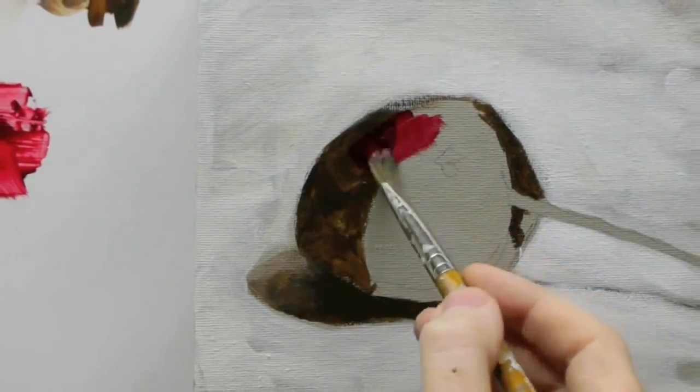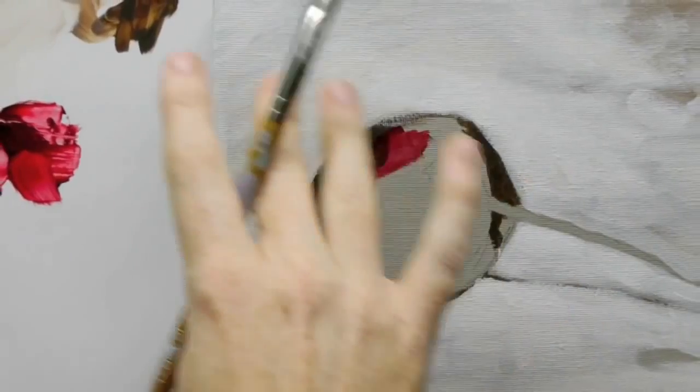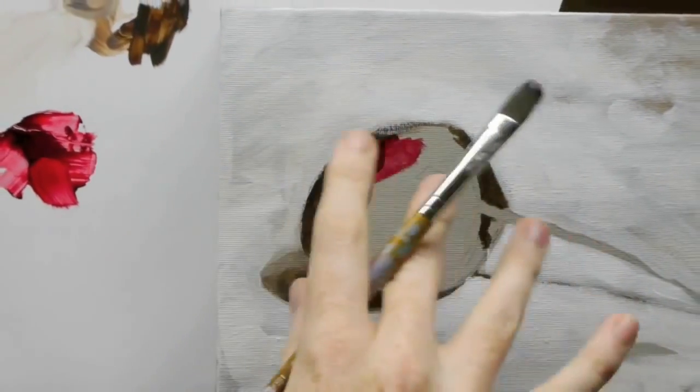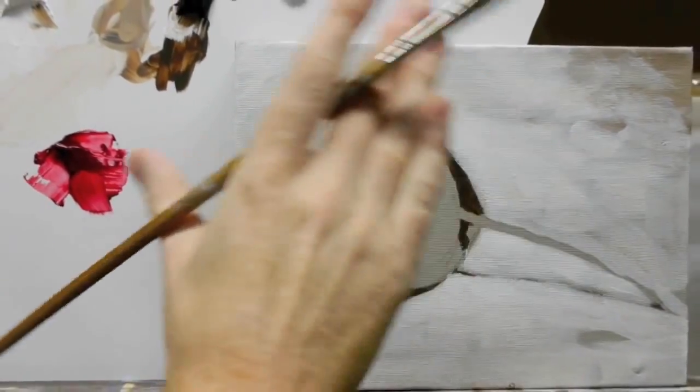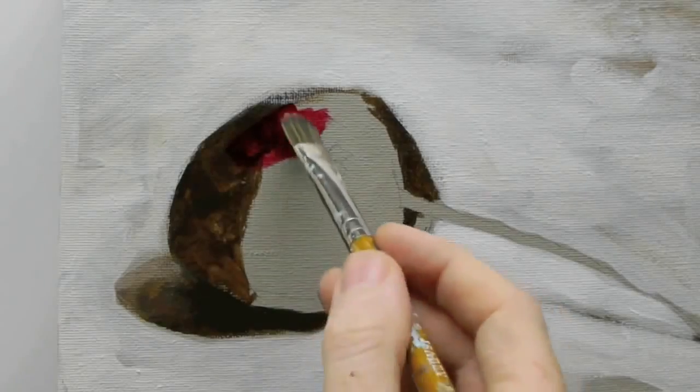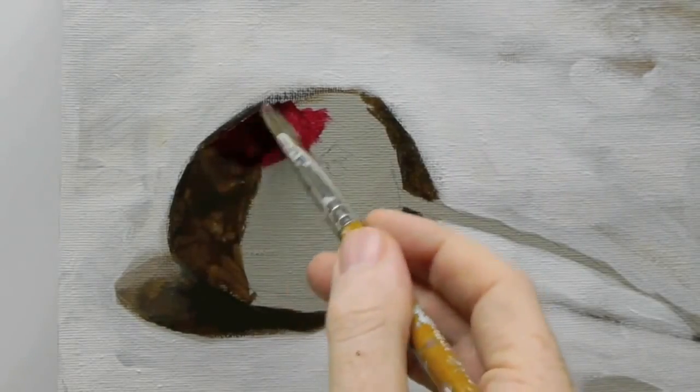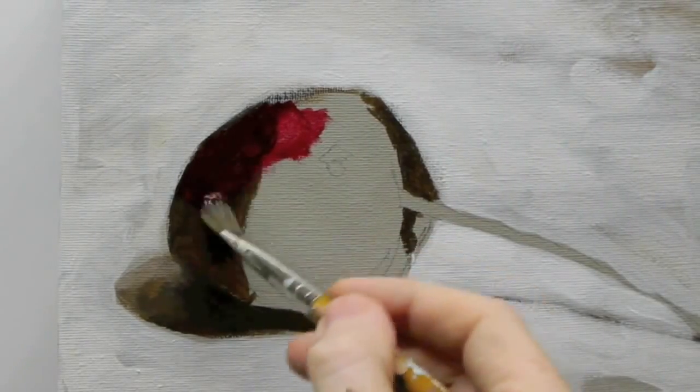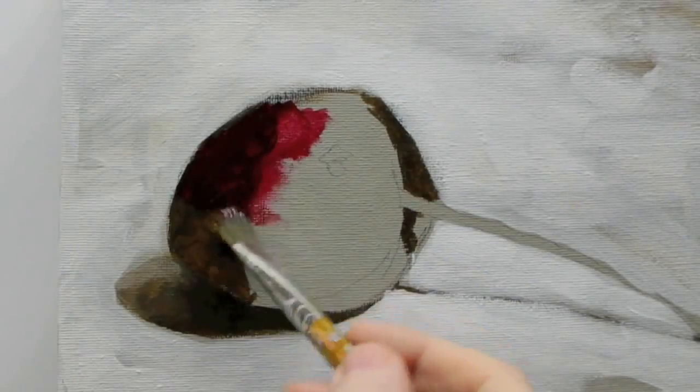So this is just called a glaze, where you have a thin layer of paint that goes over another. It's like trying to have a very thin translucent layer of coloured glass, like a stained glass window effect that you put over objects. So you see how what it does is it tones down the burnt umber that we had underneath it, but still let some of that colour subtly come through.